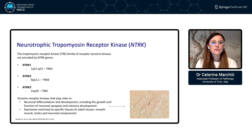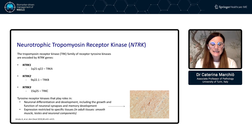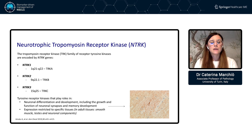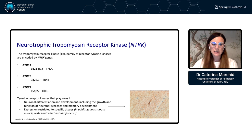First of all, let's introduce ENTRAC genes. These are three members of this ENTRAC family — ENTRAC 1, 2, and 3. They encode for three different proteins and map as genes on different chromosomal locations. They belong to this family of tyrosine kinases that play a role during neuronal differentiation, so the expression of these proteins is restricted to specific tissue such as neuronal components. On the right-hand side, you have a picture of a cerebral cortex stained with a PANTRAC antibody showing expression of these proteins.